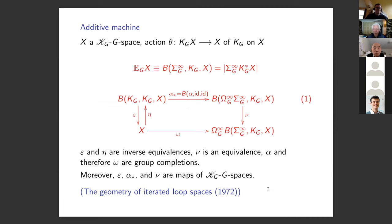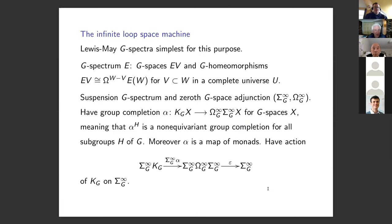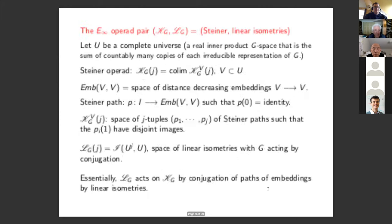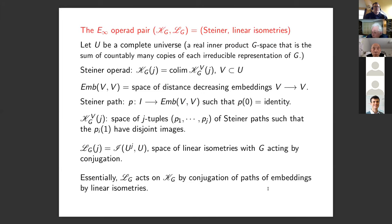There is a classical E-infinity operad pair from the early 1977 book — I originally had a partial operad, and Richard Steiner came along and gave a really nice improvement. Let U be a complete universe, a real inner product G-space that is the sum of countably many copies of each irreducible representation of G.